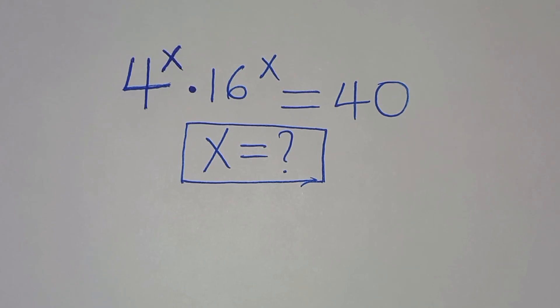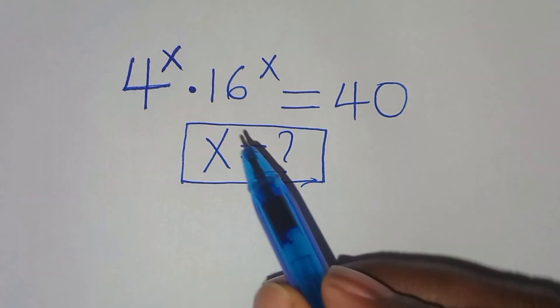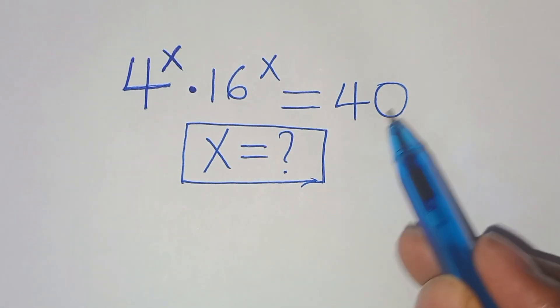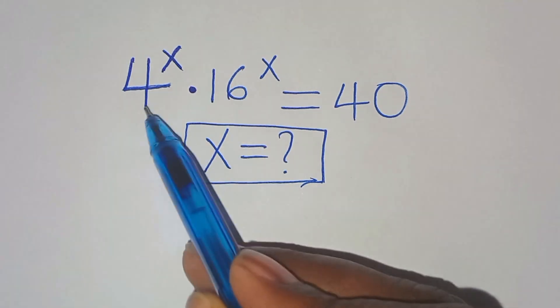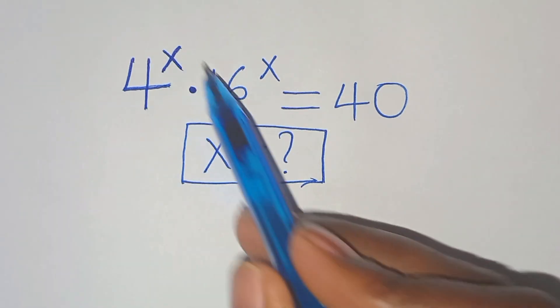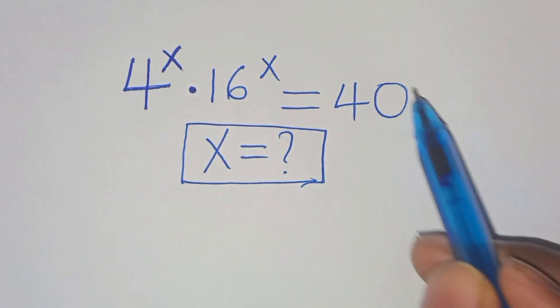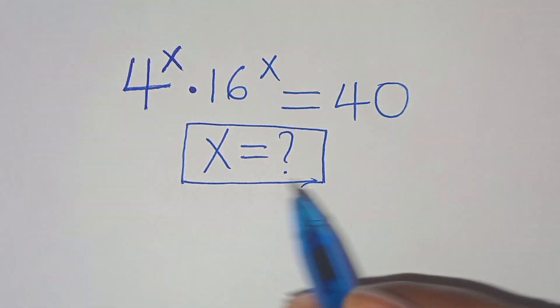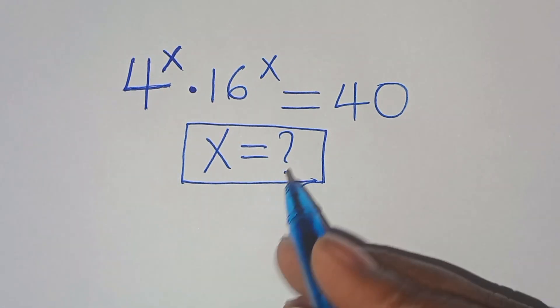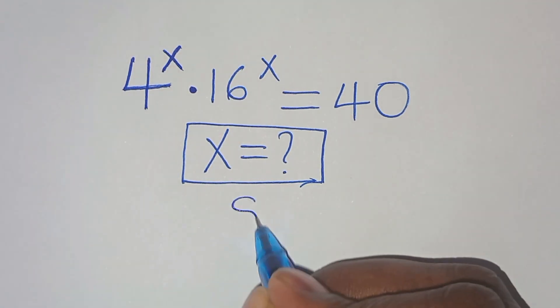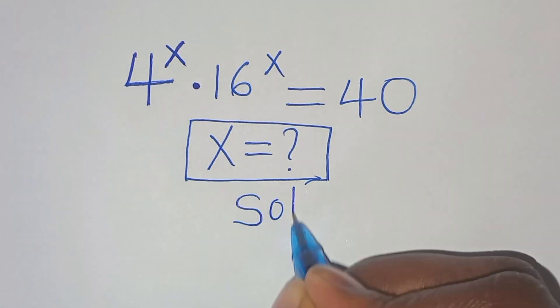You are welcome to solve this nice exponential equation: 4 to the power of x times 16 to the power of x is equal to 40. So what is the value of x?